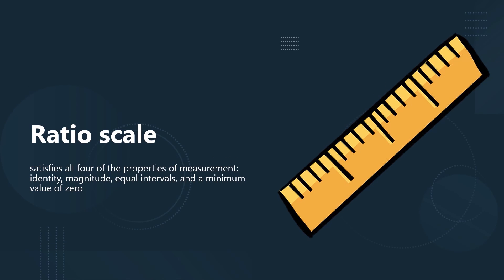In practice, interval and ratio are grouped together since both are considered numeric in nature. Most parametric tests only require variables in terms of measurement scale to be at least interval. That's it for our video.